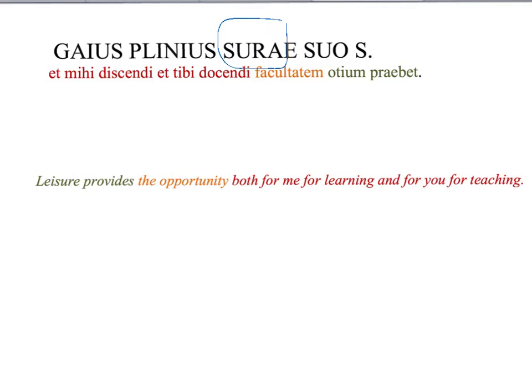The opening of this letter is a nice short sentence. Leisure provides the opportunity. Here's the word for leisure and here's the word for provide. This is the opportunity. And this is the bit that needs to be commented: both and, et, et. And then we've got two datives for me and for you, and then we've got two gerunds in the genitive of me learning and you teaching. So gerunds are verbal nouns, just as we have in English. So we've got this really nice, elegantly balanced phrase here for me and for you.